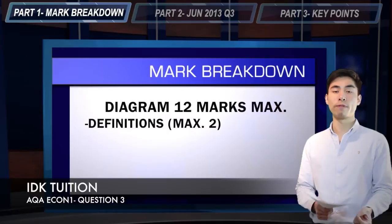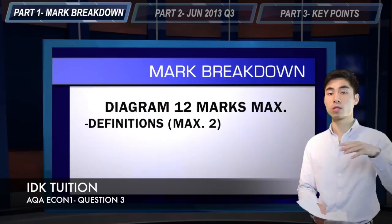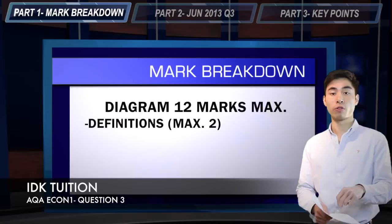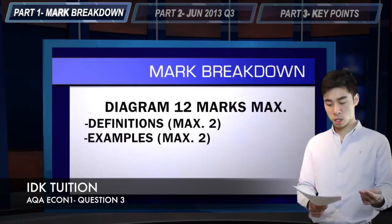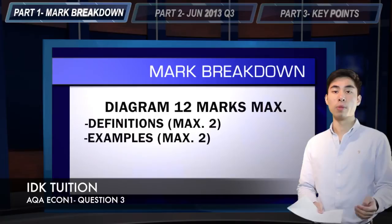A good rule of thumb: for question 1, your definition question, you can obtain two marks for including relevant diagrams. And similarly, on your diagram question, you can obtain two marks for including relevant definitions. And depending on the paper, you might also be able to obtain a further two marks for including examples for these definitions — so a maximum of two marks for definitions, maximum of two marks for examples.